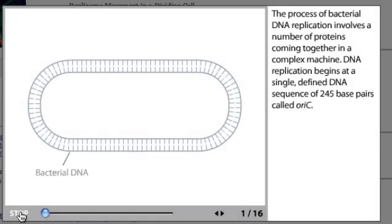The process of bacterial DNA replication involves a number of proteins coming together in a complex machine. DNA replication begins at a single defined DNA sequence of 245 base pairs called oriC.